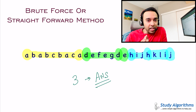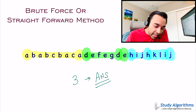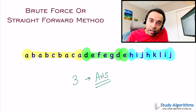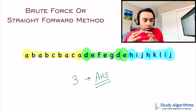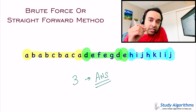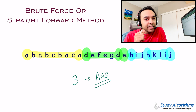This approach works and will give you a correct answer every time. But the major problem is that you are comparing each character against the entire string every time. When you got into your next partition you were looking for E; in the third partition you were looking for I. You are making a lot of comparisons, and this will slow down your code. So, can we think of a faster way to solve it?